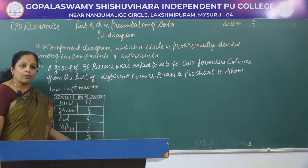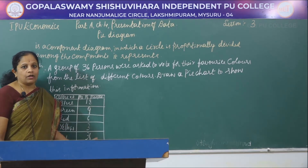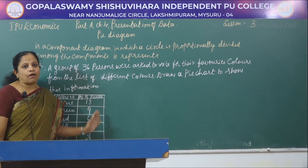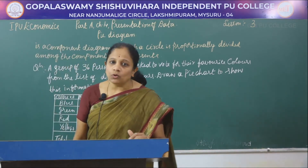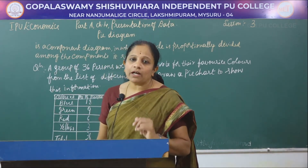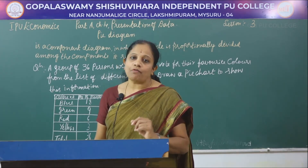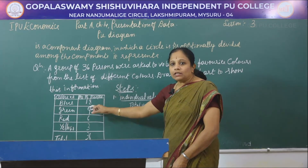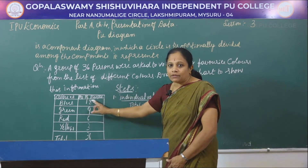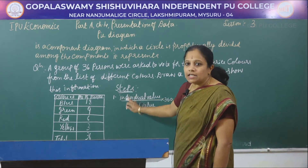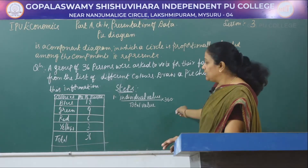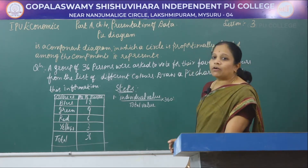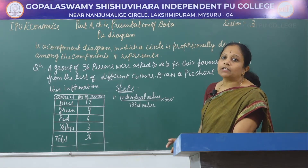Now we understand the problem. For this, we have to calculate the central angles of each section. The formula is: individual value divided by total value multiplied by 360 degrees. The first step is to calculate the central angles for all the favorite colors using this formula, because a circle is 360 degrees.